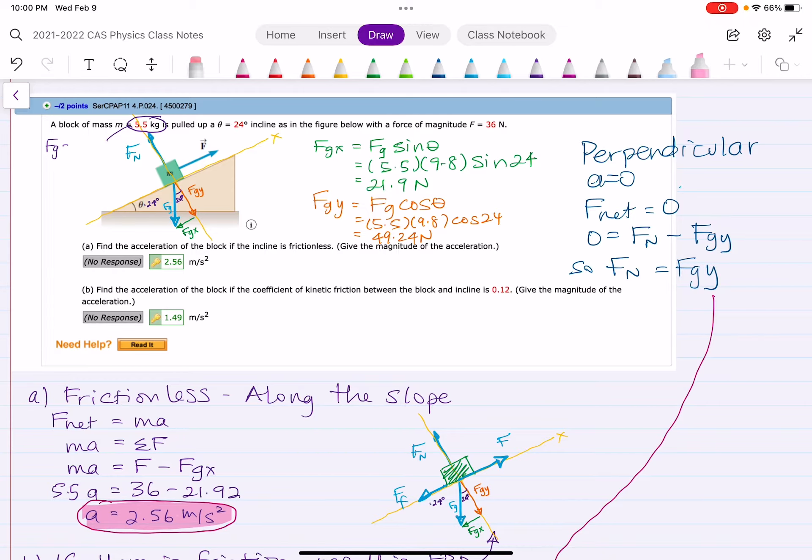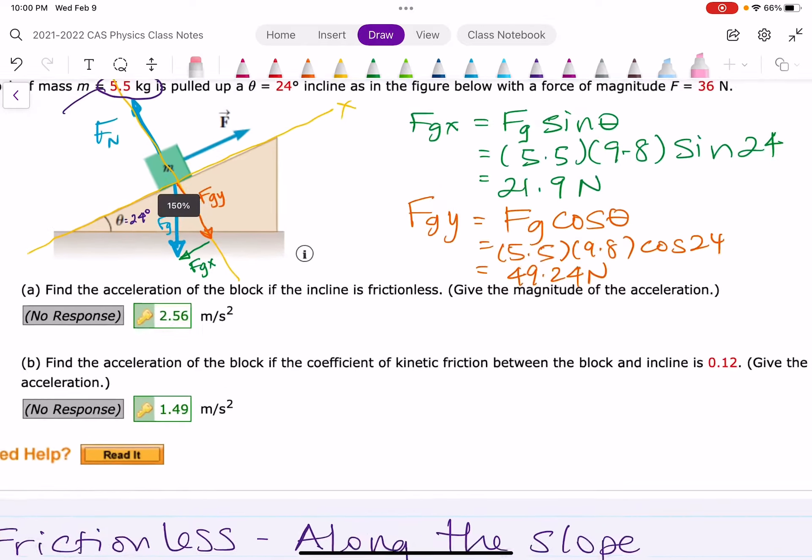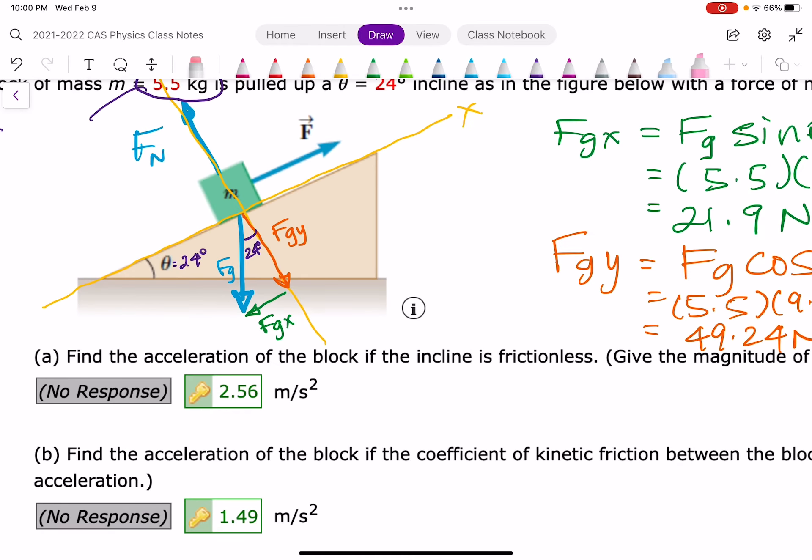So there's only three forces acting on the block. There's the force, that's 36 newtons, that's pulling it up against gravity. And again, we have this same triangle. The triangle's the same every time there's a slope problem. So I will say it again, get to know this triangle.